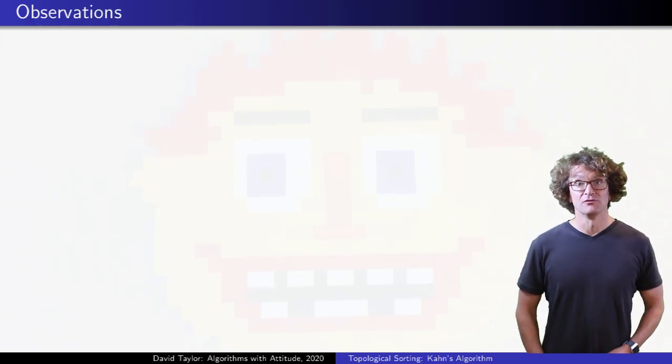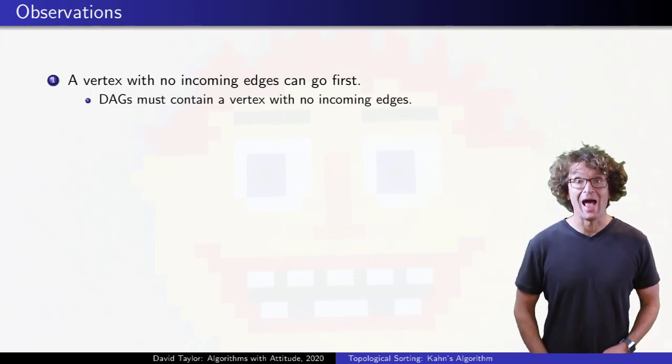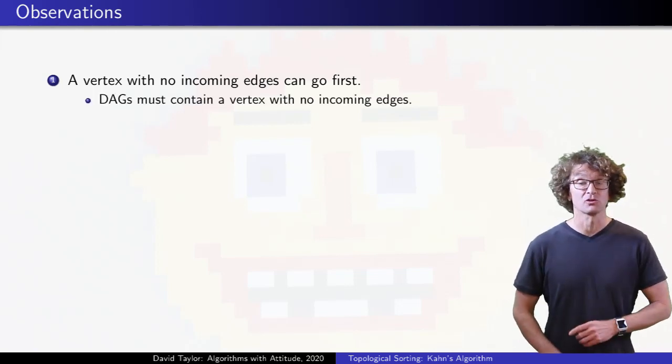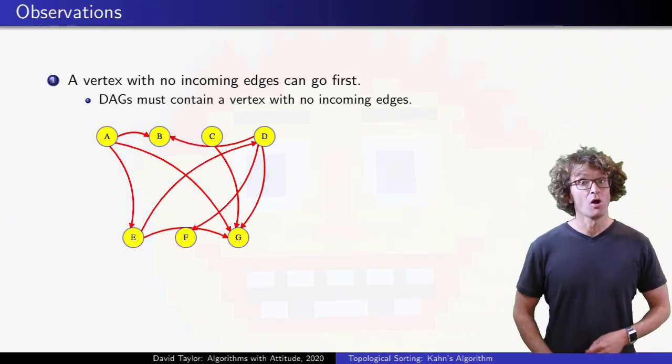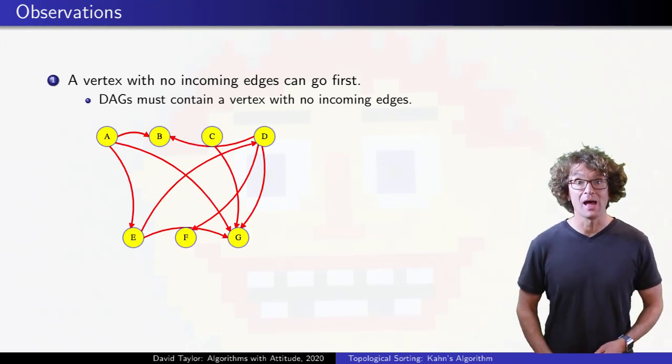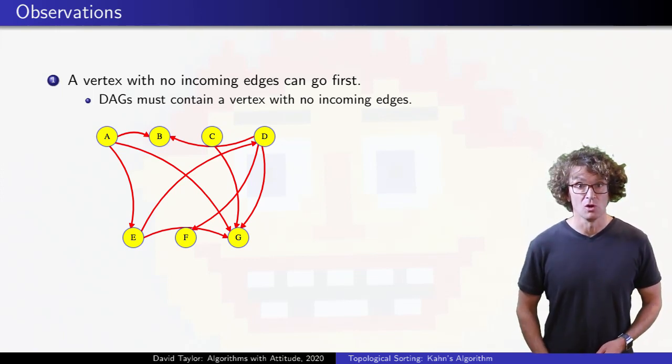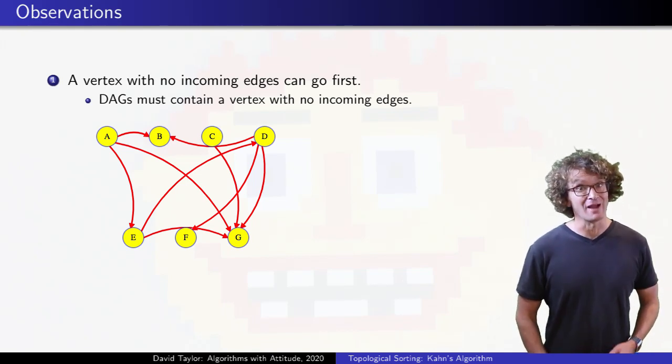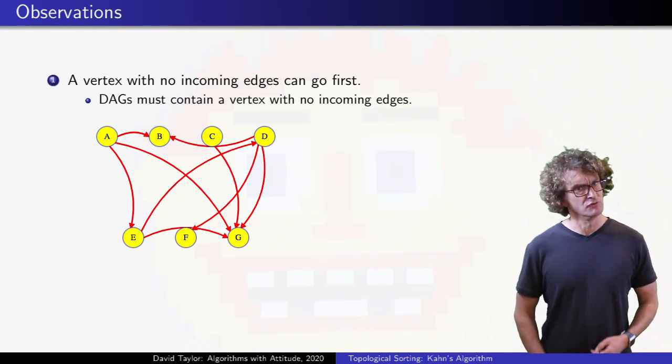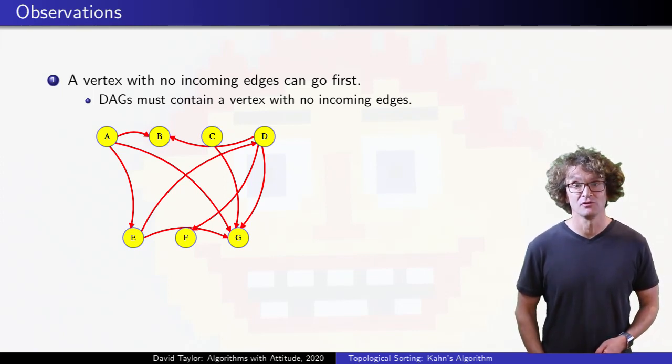To start, notice that if a vertex has no incoming edges, it can go first. Also, in an acyclic graph, there has to be at least one vertex with no incoming edges. If you want to find one, start at an arbitrary vertex and follow a path of incoming edges backwards. If you get to a vertex with no incoming edges, great. If not, once you've gone back V edges in a graph with V vertices, you must be repeating vertices, which means you have a cycle.